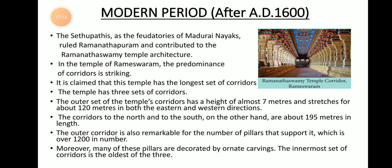The final topic is the modern period after 1600 AD. One of the most important rulers of this era were the Sethupathis, who were feudatories of Madurai Nayaks — small kings who paid tax to greater kings. They belonged to the Ramanathapuram district and contributed greatly to the Ramaswami temple architecture. In the Ramaswami temple, there is an important corridor which is considered the most important and famous feature.